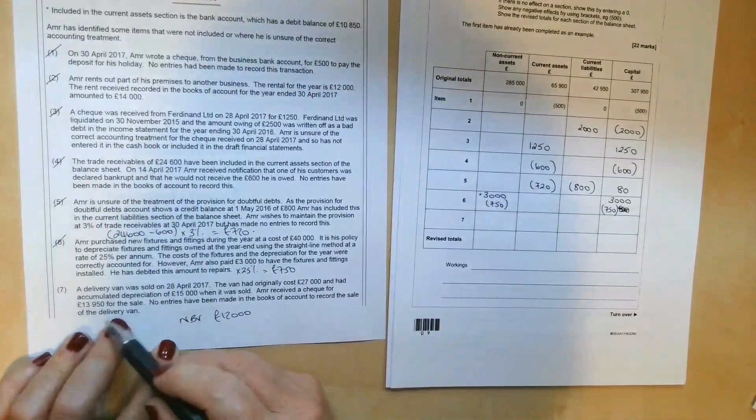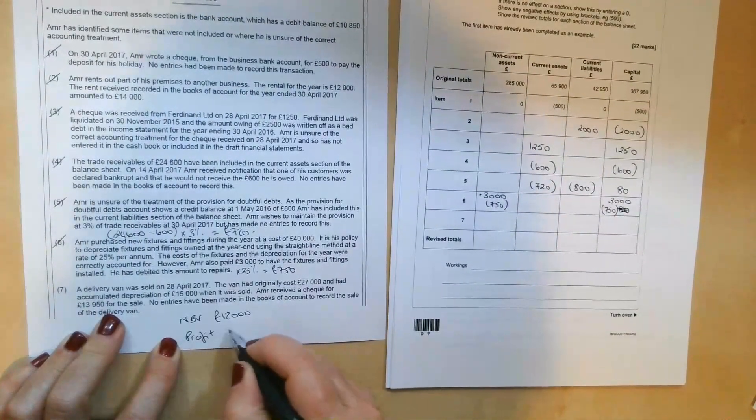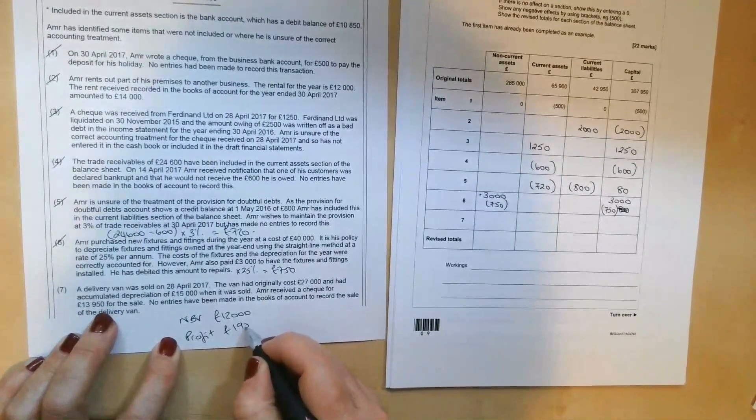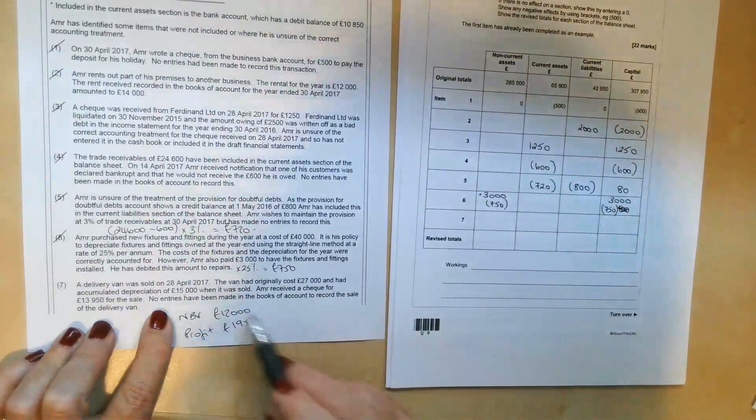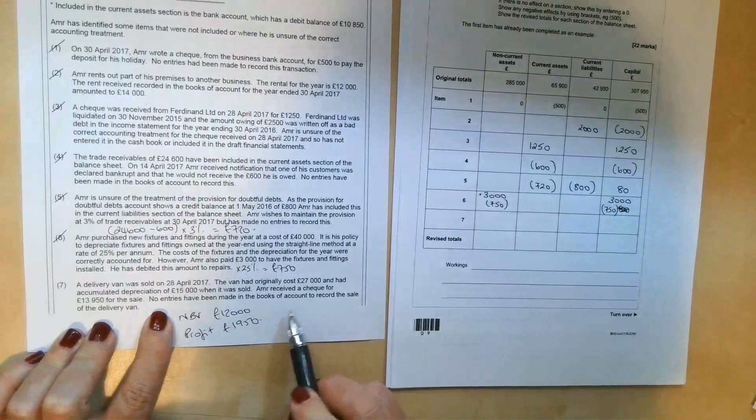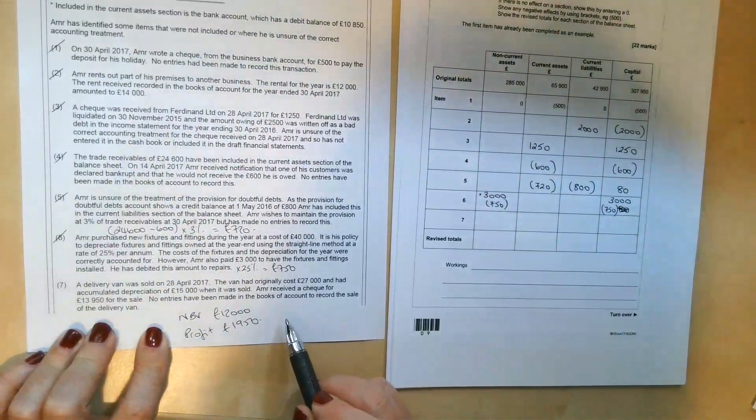Amir received a check for £13,950 for the sale. So that means he's made a profit of £1,950. That's the difference between the net book value and the sale proceeds. No entries have been made in the books of account to record the sale of the delivery van.